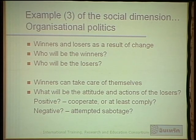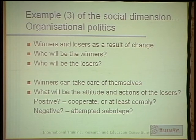Social dimension issues in the implementation and uptake of e-learning in organizations also relate to organizational politics. Any innovation has winners and losers. So in implementing e-learning in an organization, it's helpful to identify who are going to be the winners and who are going to be the losers. Winners can generally take care of themselves, but we need to think about what's going to be the attitude and actions of the losers — are they going to cooperate, at least comply, be negative, or attempt to sabotage the innovation and make it unsuccessful?